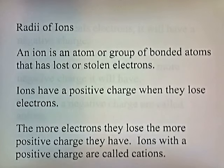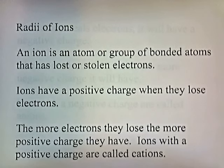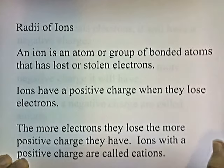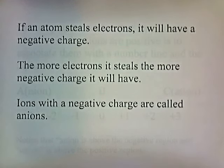Now let's talk about the radii of ions. An ion is an atom or group of bonded atoms that has lost or gained electrons. Ions have a positive charge when they lose electrons, and the more electrons they lose, the more positive charge they have. Ions with a positive charge are called cations. If an atom gains electrons, it will have a negative charge — the more electrons it gains, the more negative. Ions with a negative charge are called anions.